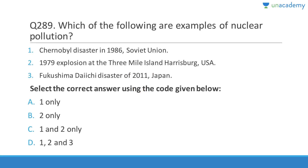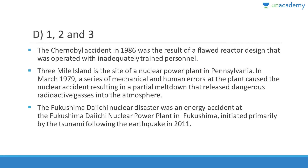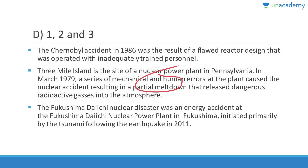Question 289: Examples of nuclear pollution include the Chernobyl disaster in 1986 in the Soviet Union, the 1979 explosion at Three Mile Island in the USA, and the Fukushima Daiichi disaster in 2011 in Japan. Answer is D (1,2,3). The Chernobyl accident resulted from a flawed reactor design; Three Mile Island involved mechanical and human errors causing partial meltdown; Fukushima followed a tsunami in 2011.